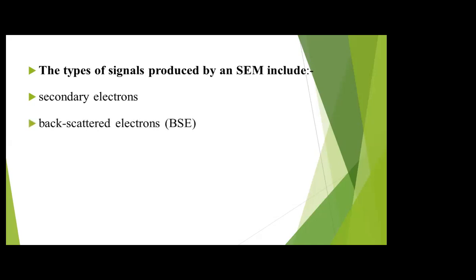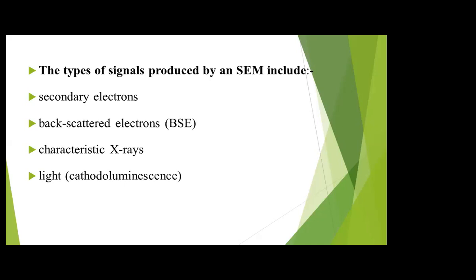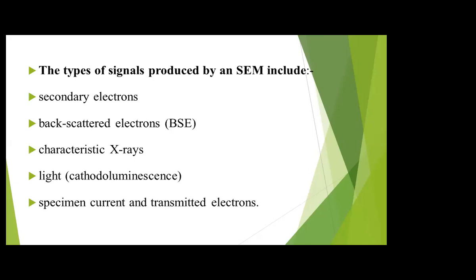When the electron beam interacts with a sample, the types of signals produced by an SEM include secondary electrons, backscattered electrons, characteristic X-rays, light, and auger electrons. Some electrons pass through the sample — these are called specimen current — and some pass beyond the sample, called transmitted electrons. Transmitted electrons may be elastically scattered or inelastically scattered electrons.